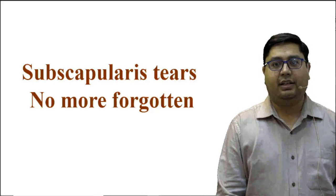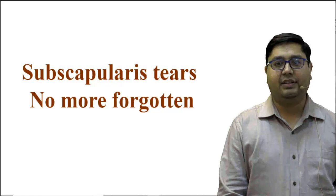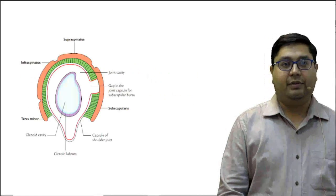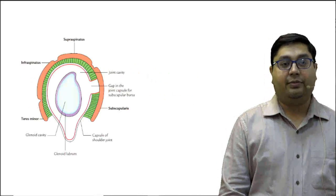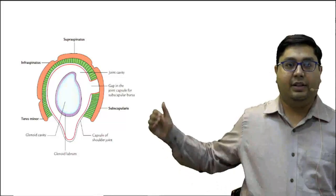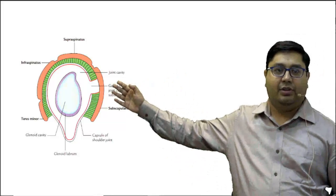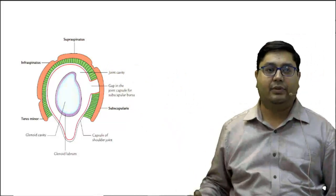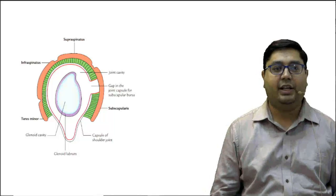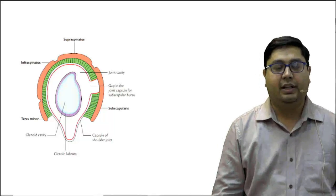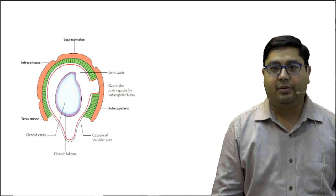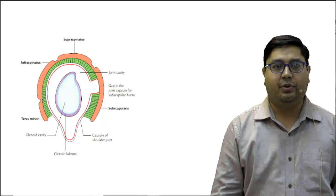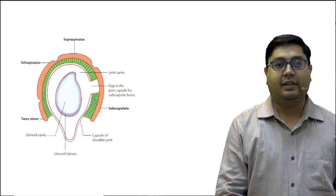I am Dr. Sandeep Madan and I will be discussing the anatomy of the rotator cuff. When we look at the rotator cuff, we know that the tendons of these four muscles are actually merging with the capsule of the shoulder joint, thereby strengthening it. That is why they are known as the musculotendinous cuff or rotator cuff.